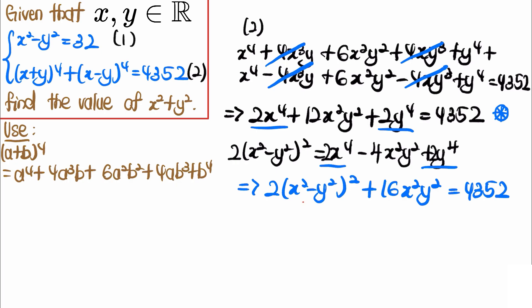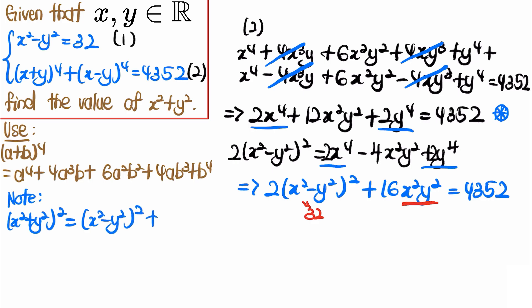Since the first equation tells us x²−y²=32, we can solve for x²y². Also note that (x²+y²)² equals (x²−y²)² plus 4x²y². So if we can solve for x²y², we can find (x²+y²)² and therefore x²+y².